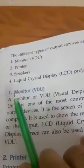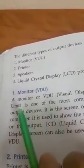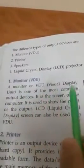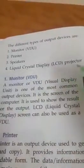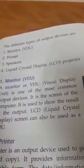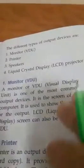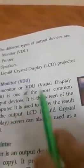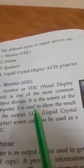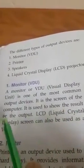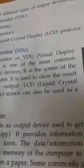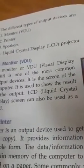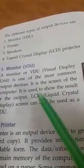Today we are going to learn about our first output device: the Monitor, also called VDU. Its full form is Visual Display Unit. It is one of the most common and important output devices. Whatever result is produced — whether typed text, pictures, or cartoons — it is displayed on the monitor screen.